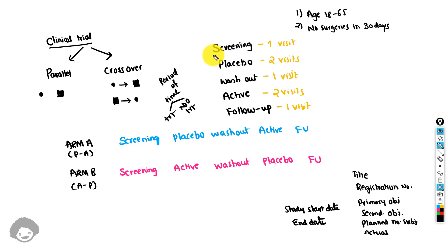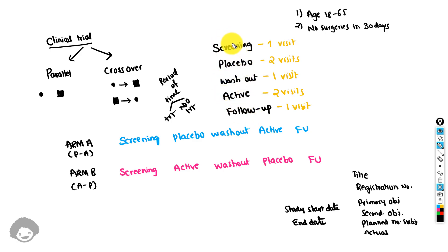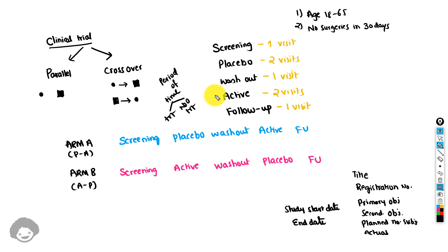Screening is an element, placebo is an element, washout is an element, active is an element, and follow-up is an element. These are considered the building blocks of our trial. A subject may continue through all the elements or may drop off in between, but these are the basic building blocks of the study.